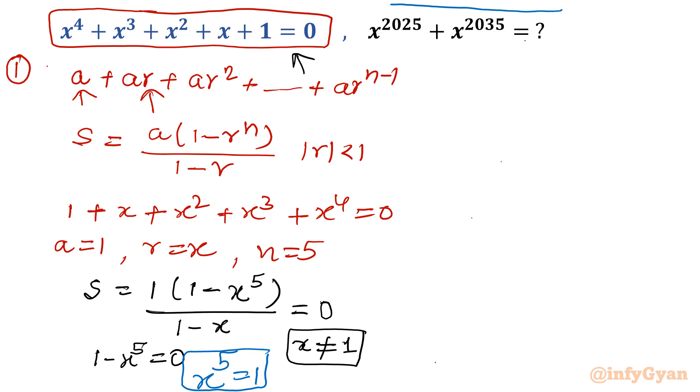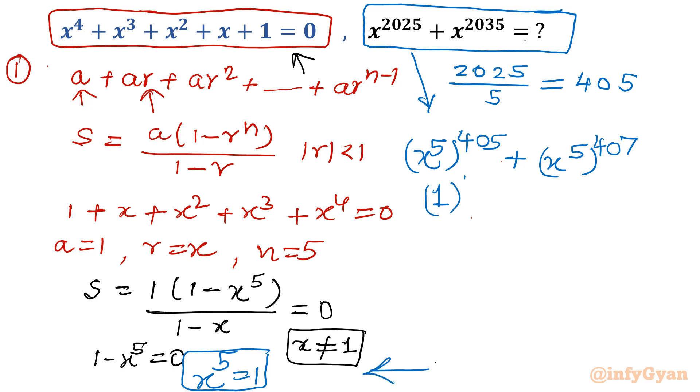So this is our conclusion using GP. Now come to our expression which we have to evaluate. Now x power 2025: if you divide 2025 by 5, you get 405. I can write x power 2025 as x power 5 whole power 405. Again, 2035 is x power 5 whole power 407. Now this value is 1 from the equation we calculated. x power 5 is 1 power 405 plus 1 power 407. 1 raised to the power anything equals 1, so 1 plus 1, answer becomes 2.